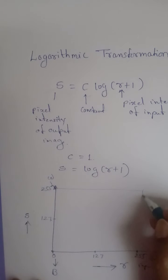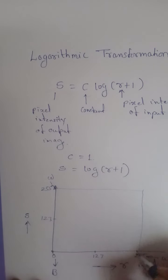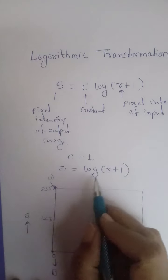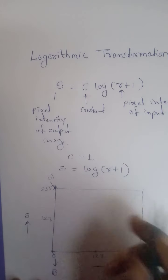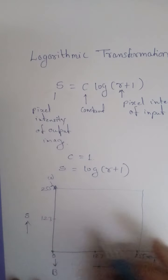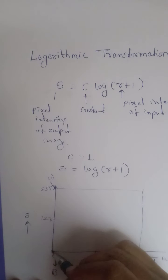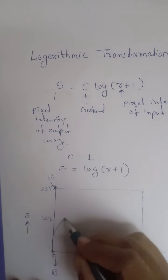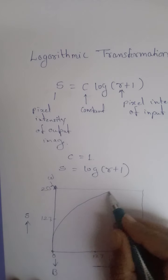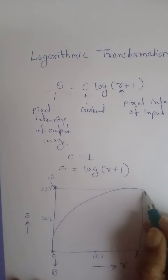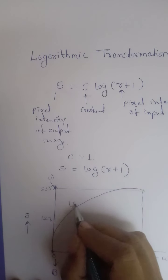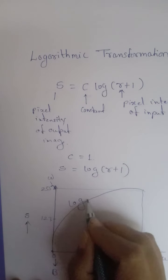If we plot s = log(r + 1) on the graph, we get something like this. This is the log transform curve.